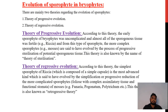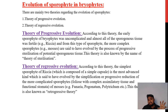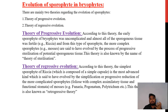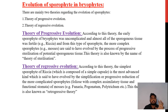The evolution of sporophyte in Bryophytes: there are mainly two theories. The theory of progressive evolution states that the early sporophyte of bryophytes was uncomplicated and almost all of the sporogenous tissue was fertile. From this type of sporophyte, more complex sporophytes evolved by the process of progressive sterilization of potential sporogenous tissue. This theory is also known as the theory of sterilization.